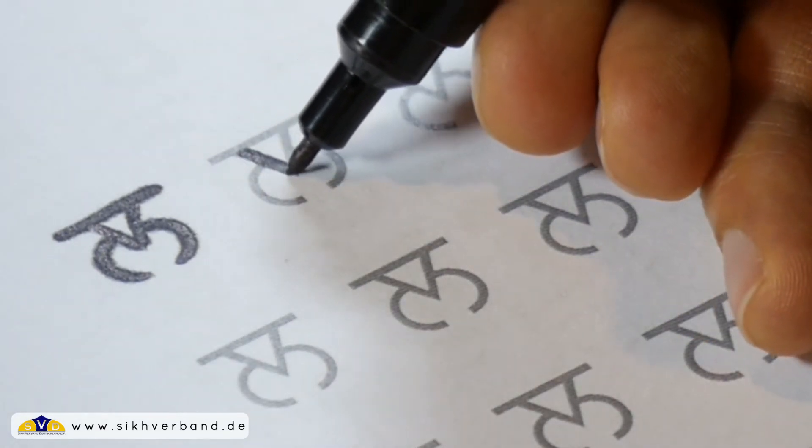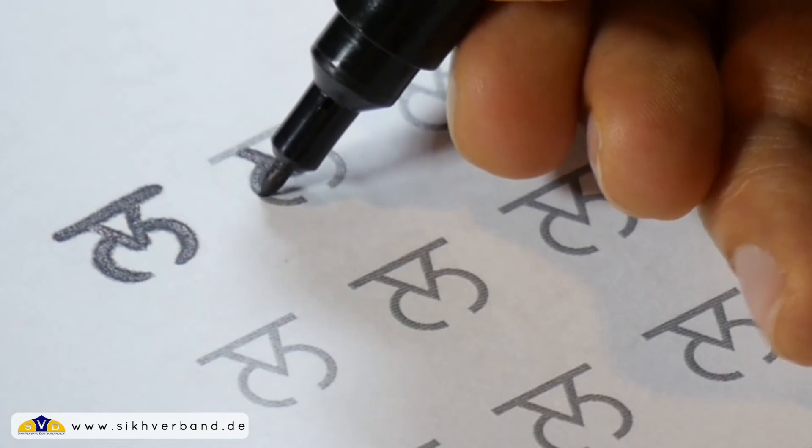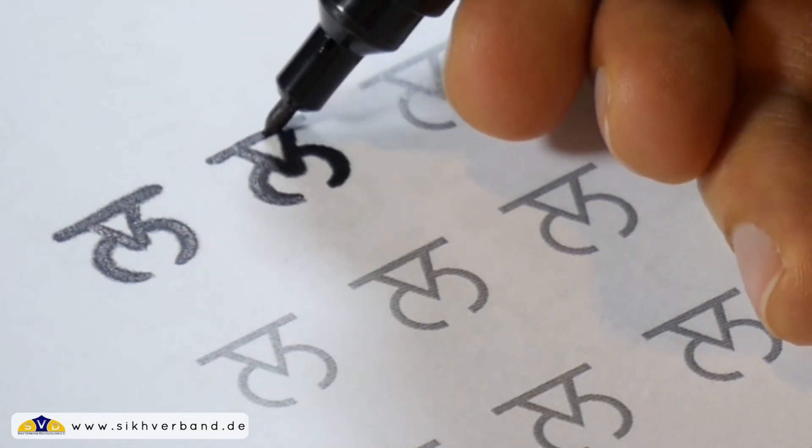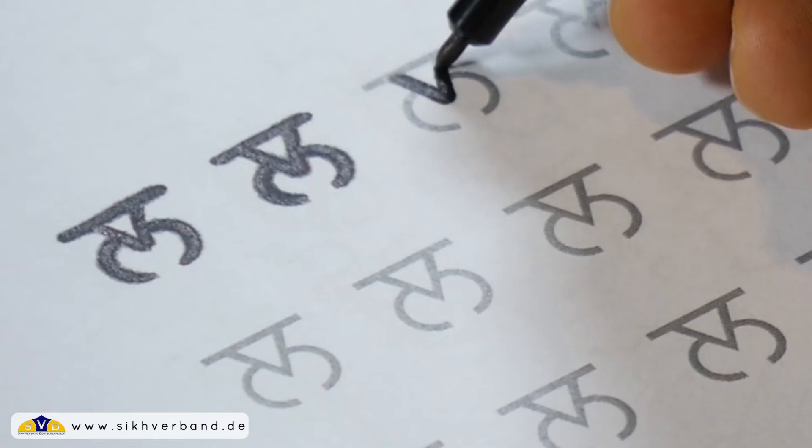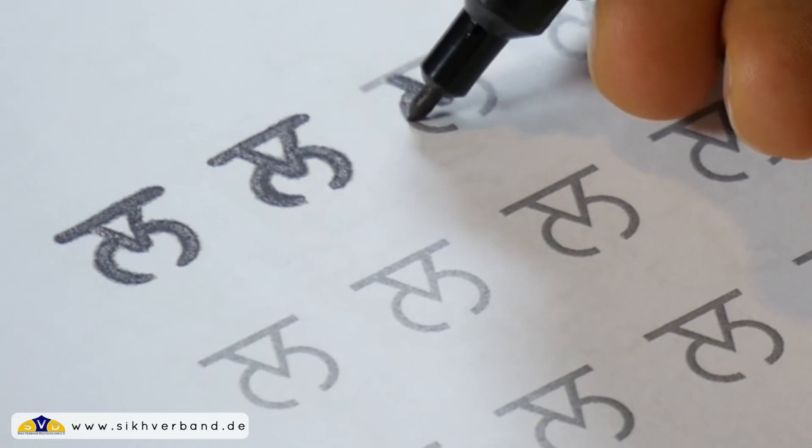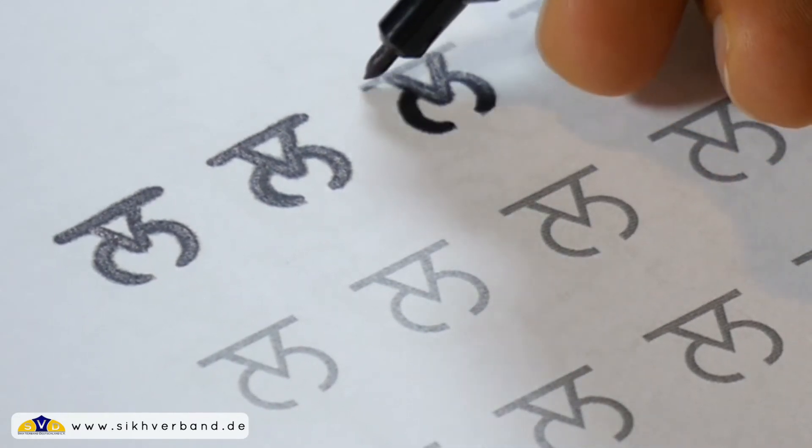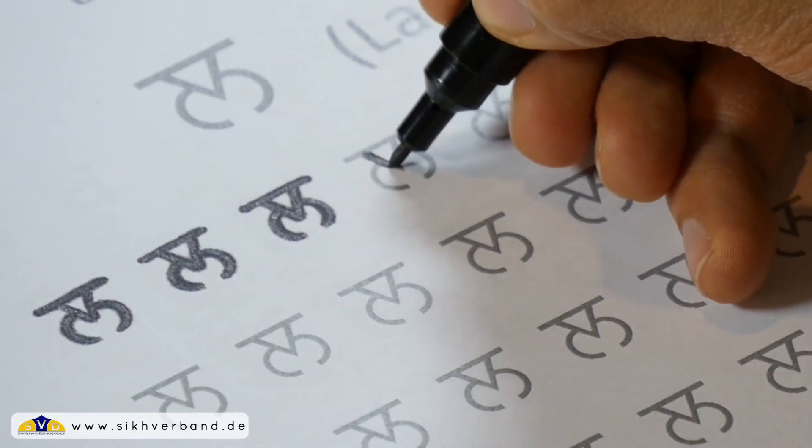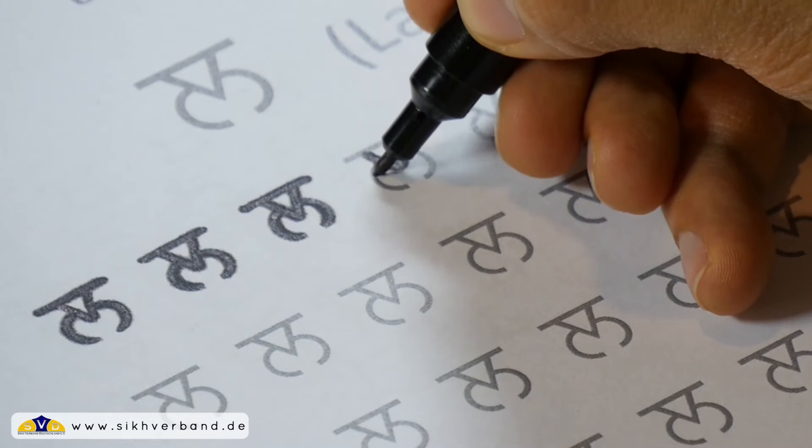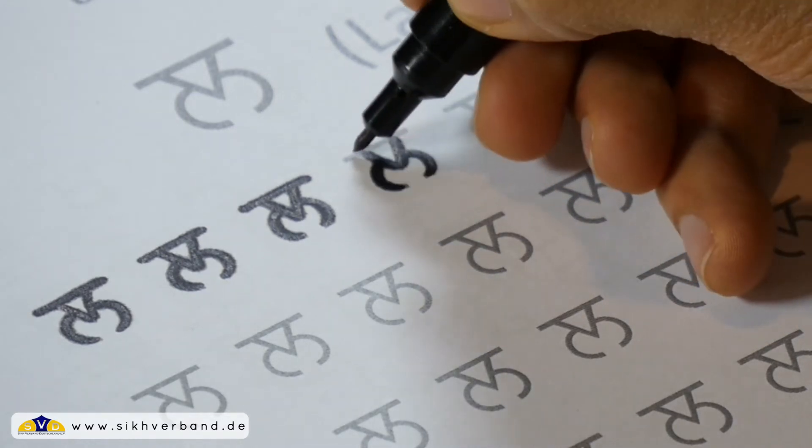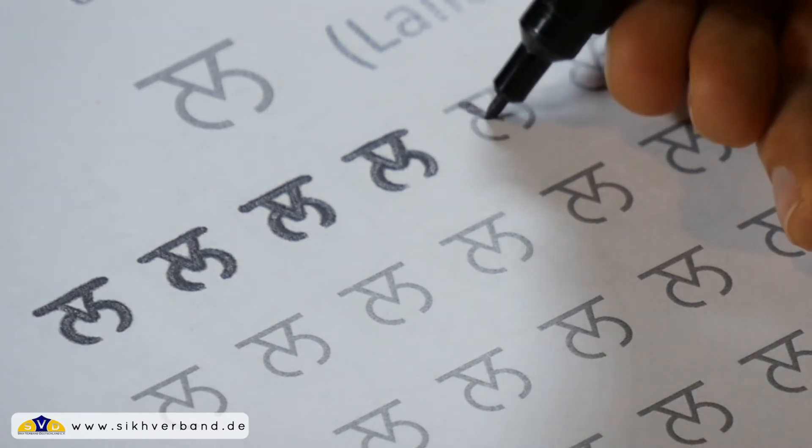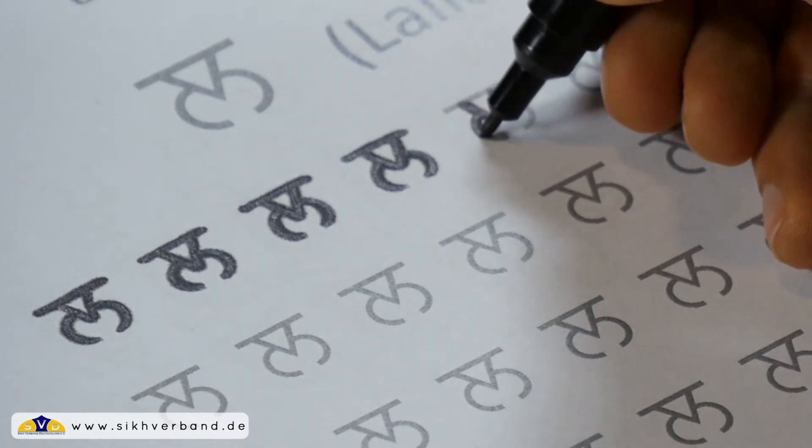Nochmals, hier so ein Dreieck und zwei Halbmonde dranhängen. Das variiert auch wirklich nach dem Stil der Handschrift. Manche ziehen das konsequent mit einem Dreieck durch oder man kann auch, einige machen es auch etwas runder, nicht so eckig das Dreieck. So machen das die meisten eigentlich.